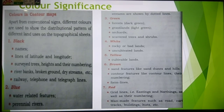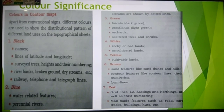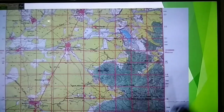Red color is used for all grid lines — that is, eastings and northings and their numbering. All man-made features such as roads, car track, pack track, metal road, all settlements including buildings, temples, mosques, and forts — all these things are shown with red color.